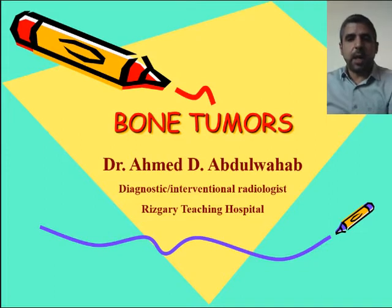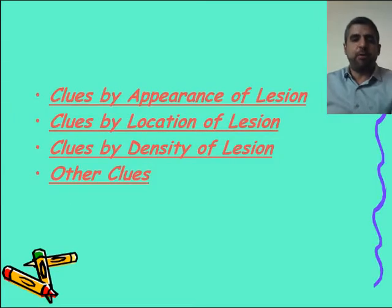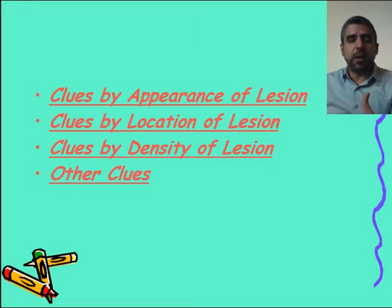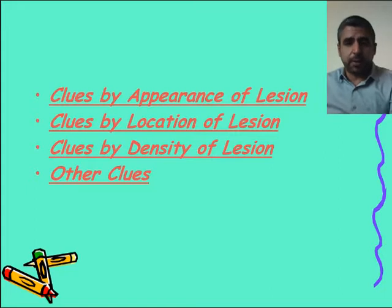When we have a bone lesion, we are looking for clues. Clues that might help us include the appearance of the lesion, the location of the lesion, the density of the lesion, and other clues such as a soft tissue component. We will talk about these clues one by one.